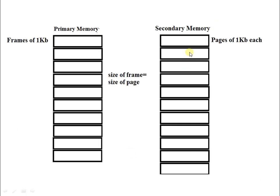In paging, secondary memory is divided into equal-sized fragments called pages, and primary memory is also divided into equal-sized fragments called frames. The frame size equals the page size. Here we assume pages of 1KB. This concept — dividing both secondary memory into pages and primary memory into equal-sized frames — is known as paging.